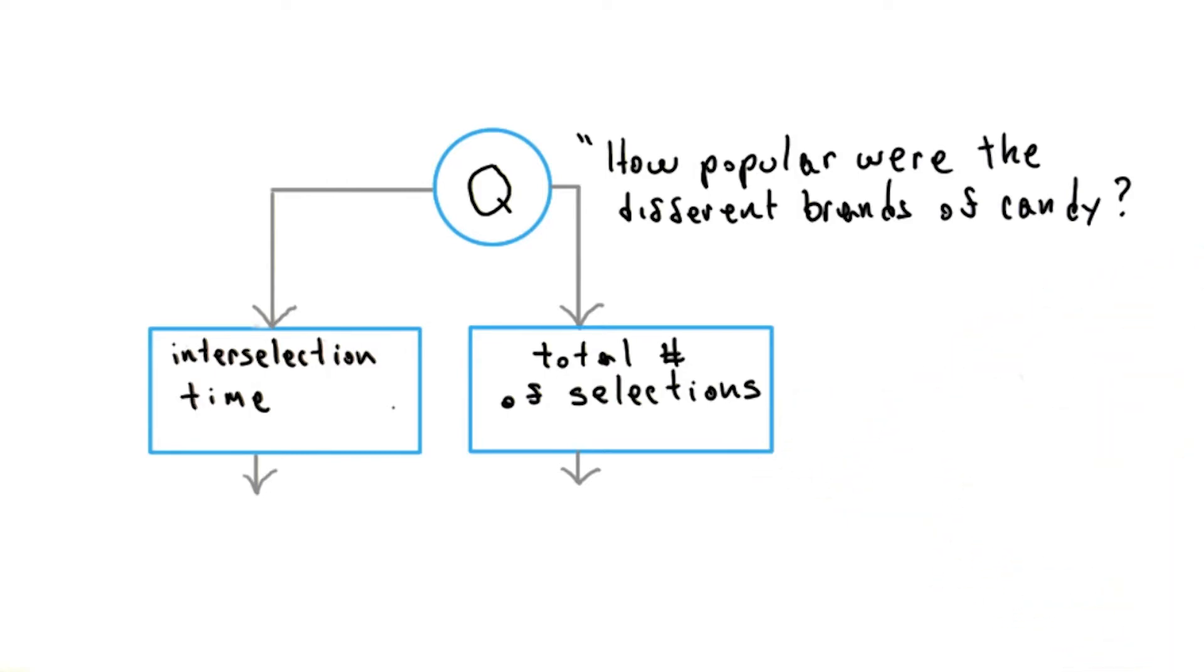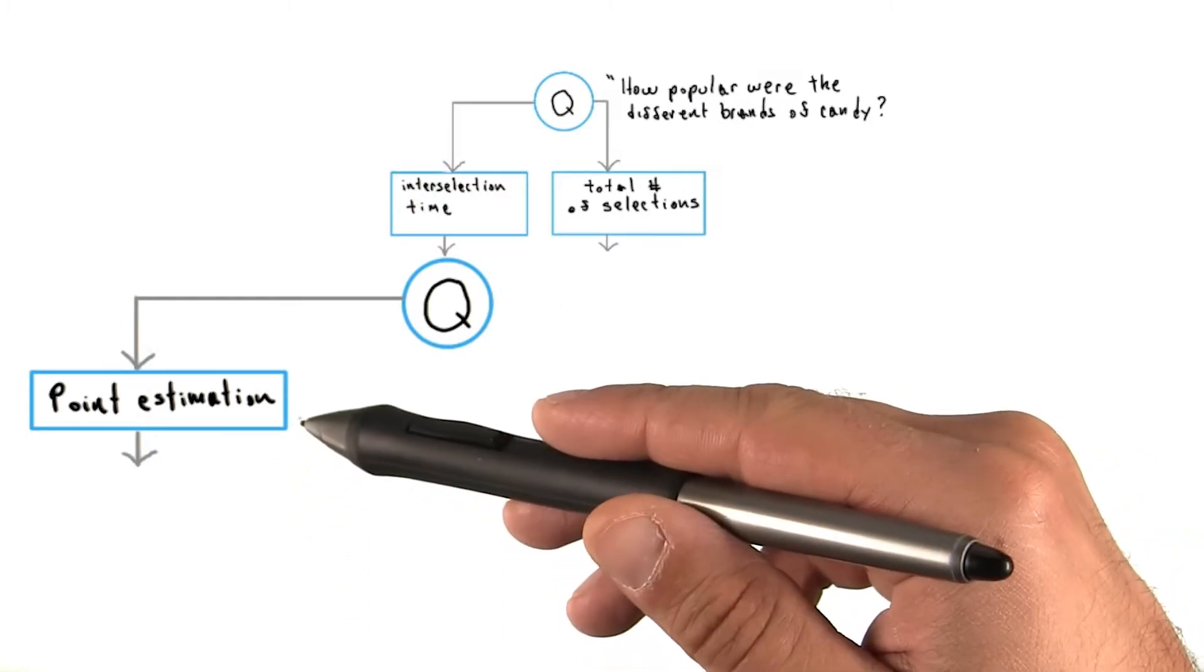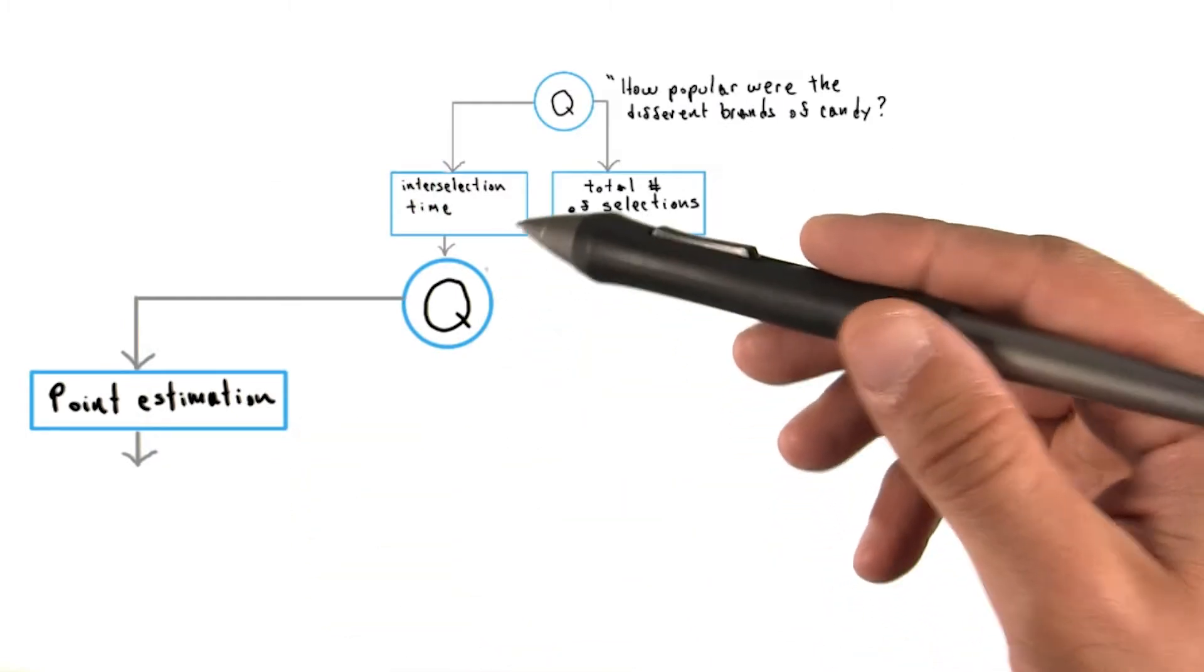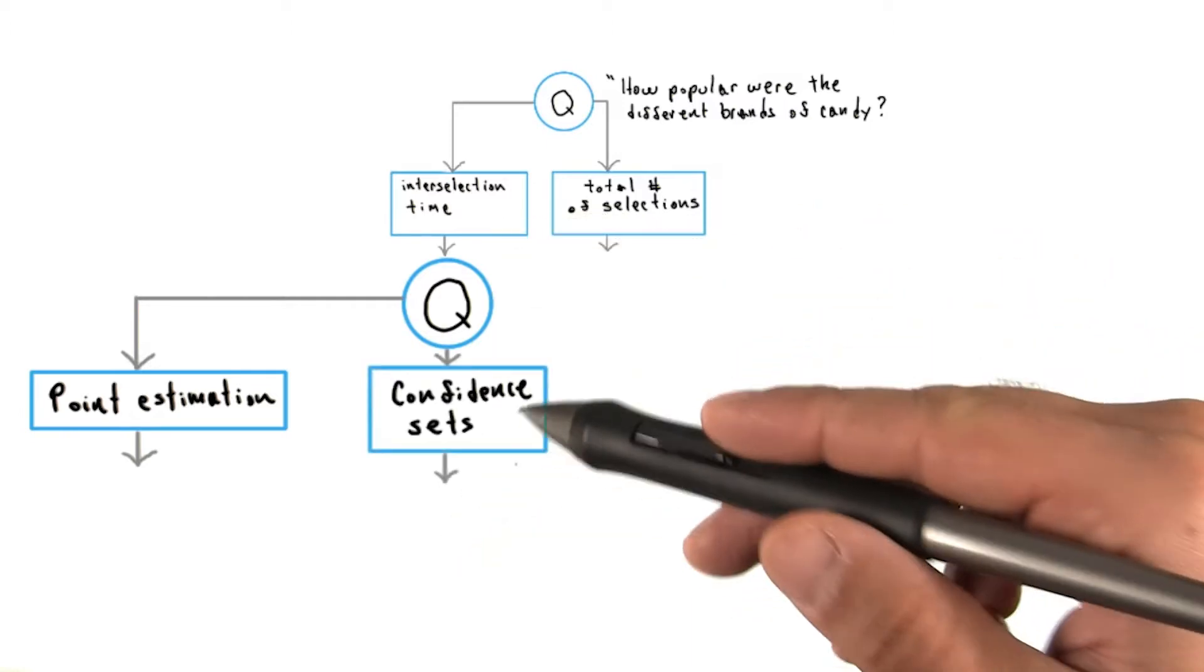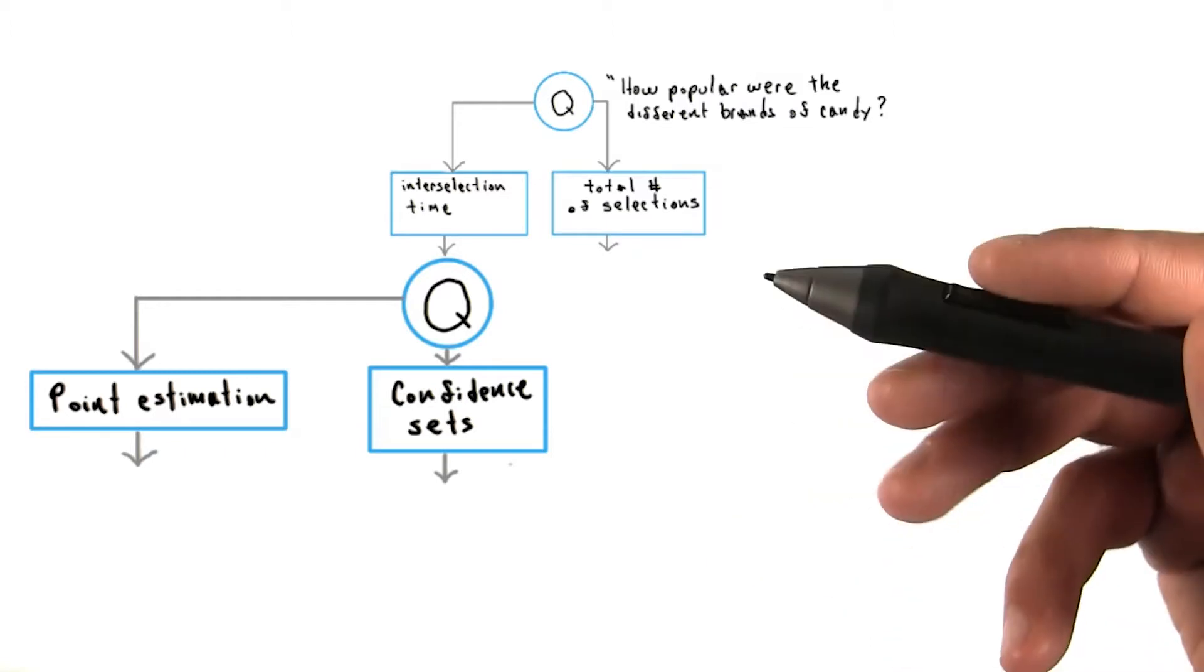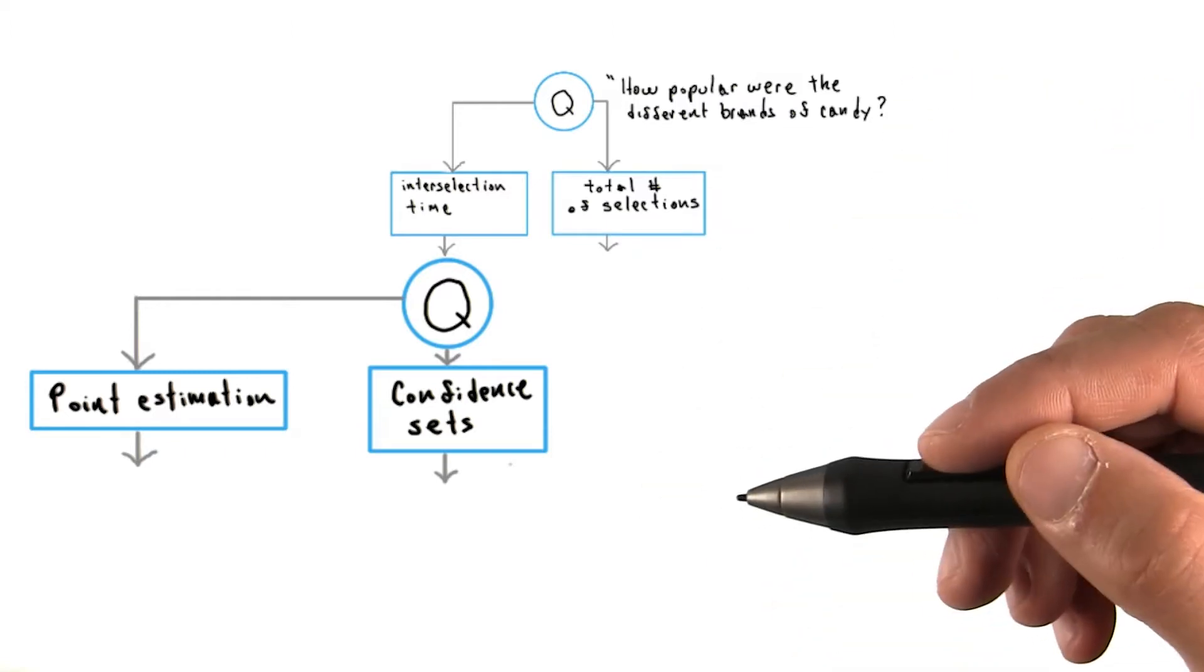So there are many options for doing so. One is point estimation, in which we explicitly try to create an estimator for our quantity interselection time. Another is confidence sets, in which we try to create an interval which traps the true value of interselection time with some confidence level.